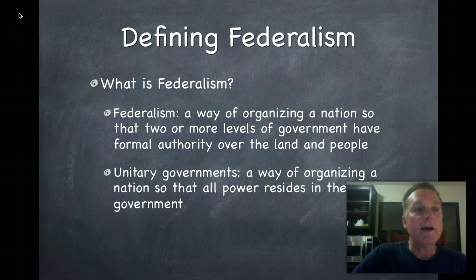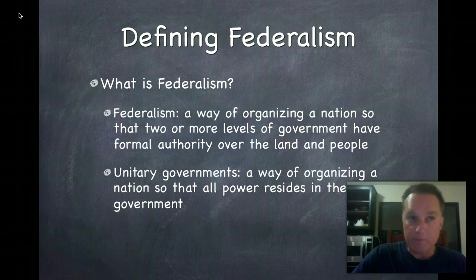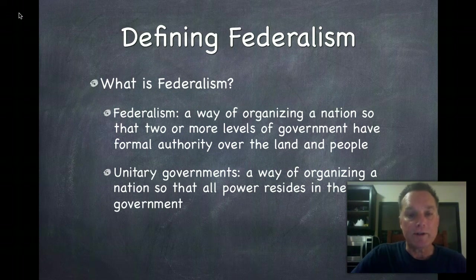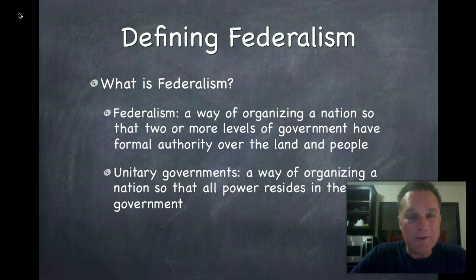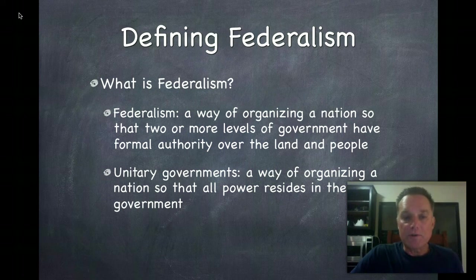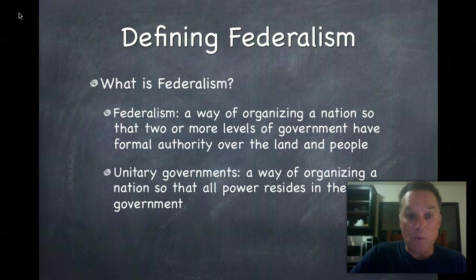Now when we looked at lecture number seven, we talked a little bit about unitary governments. England is probably the most familiar example of unitary government. In unitary governments, authority is centralized into one place. At least until recently in Britain, decisions were made in London and they affected the entire country, all the way down to the local level. That is not necessarily true as reform has come to Britain, but it's certainly true of most unitary countries.